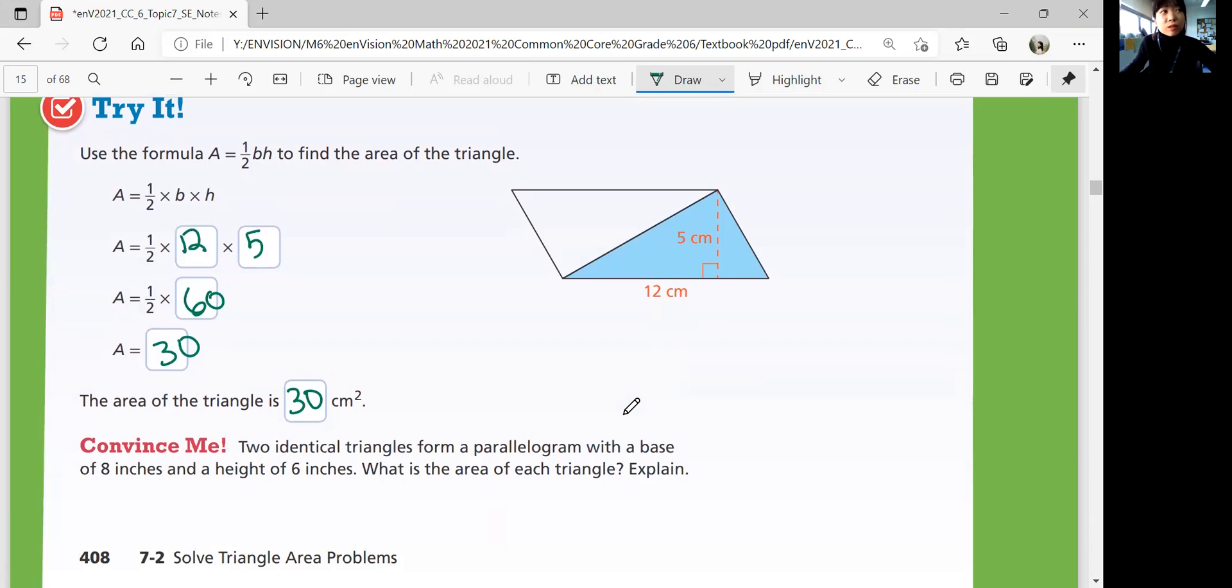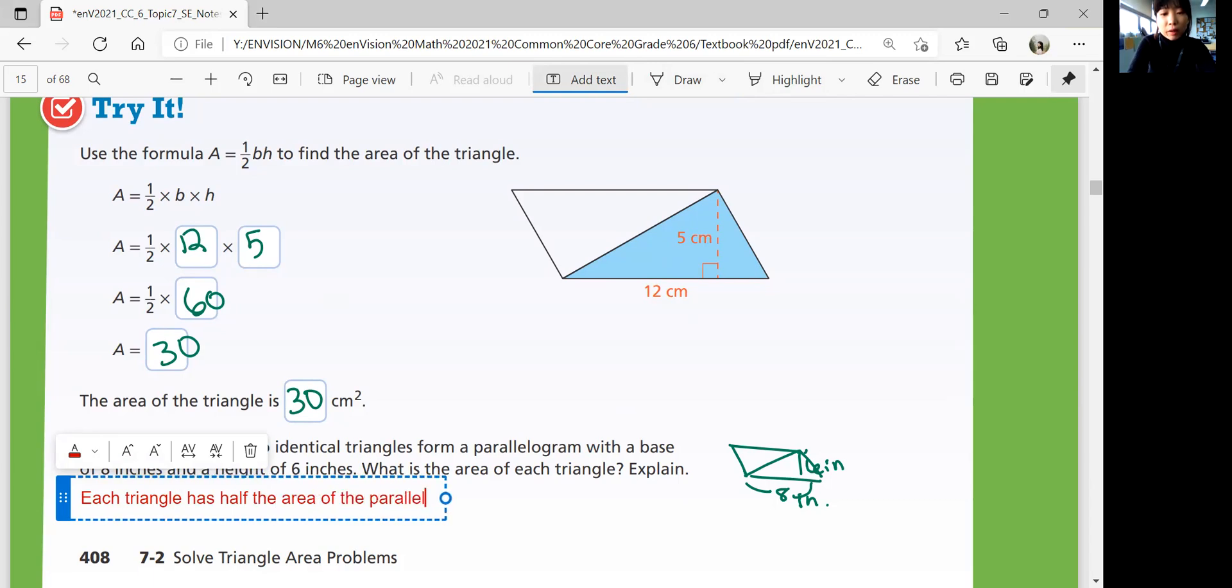Convince me. Two identical triangles form a parallelogram with a base of 8 inches and a height of 6 inches. Base of 8, height of 6. What is the area of each triangle? Explain. What's 8 times 6? 48 divided by 2 is 24. So let's write that down. Each triangle has half the area of the parallelogram. So the area is one half times 8 times 6, which is 24 square inches.